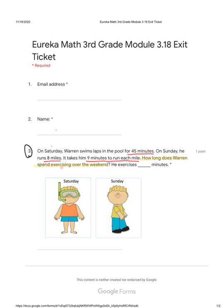On Saturday, 45 minutes. On Sunday, we have to figure out how long he exercised. Eight miles at nine minutes per mile — that is a multiplication. Eight times nine equals 72, so that's 72 minutes.